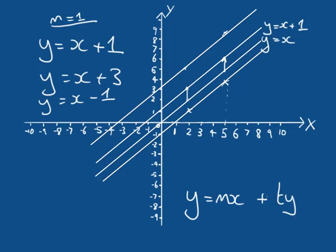For those familiar with the line equation, you may be wondering why I'm using the notation TY rather than the more commonly known notation — we'll get to that later. Right now I'm simply concerning myself with a translation in Y. TY here is a single constant value — for example, here TY equals 1, here TY equals 3 — added on after we've evaluated M times X to generate Y.